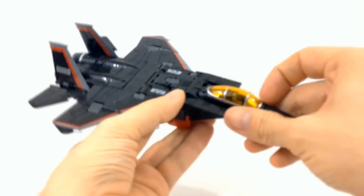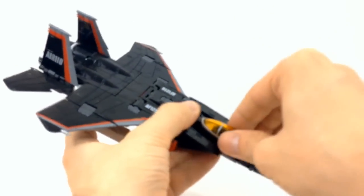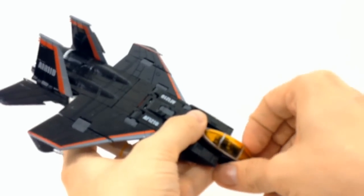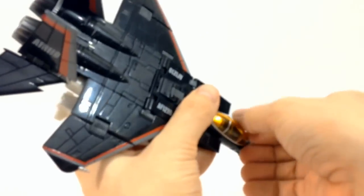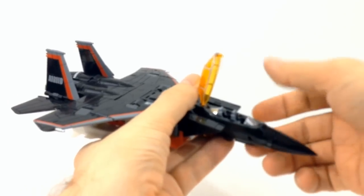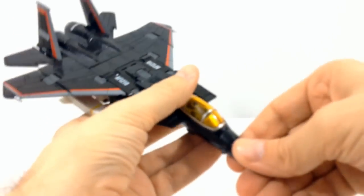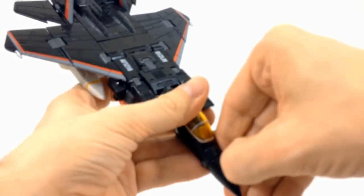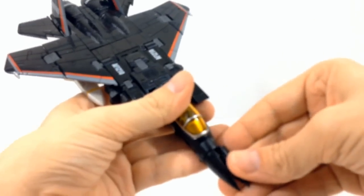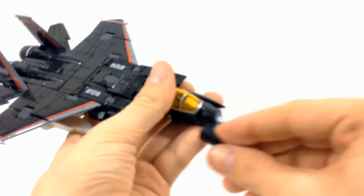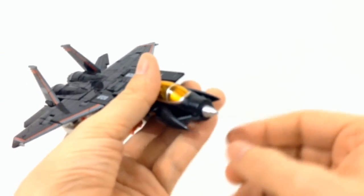Alright, some of the features that he has while he's in jet mode is that his cockpit does open. Like that. And you can open his nose cone to reveal a little sensor.